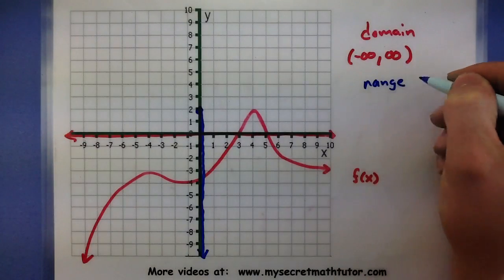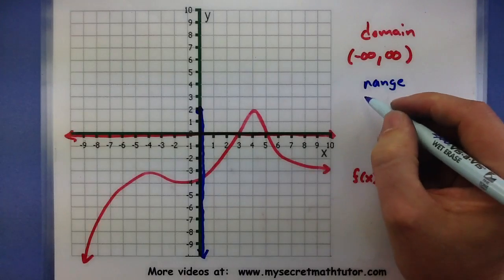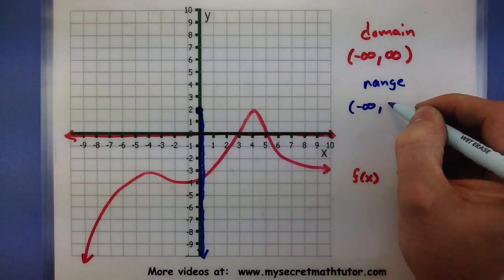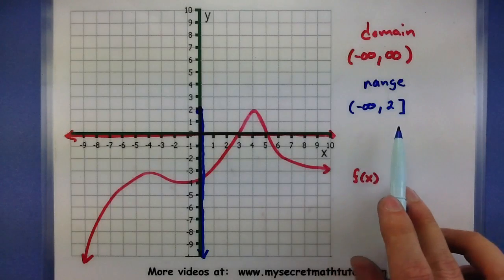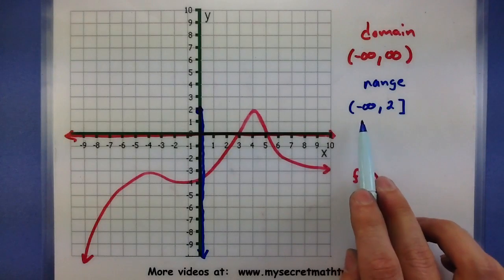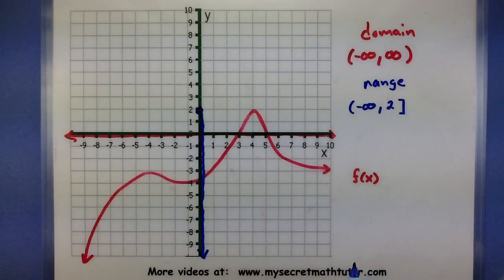So my range, this one goes from negative infinity all the way up to 2. Remember to keep these intervals with the smaller numbers on the left and the larger numbers on the right. From negative infinity all the way up to 2.